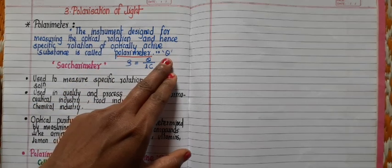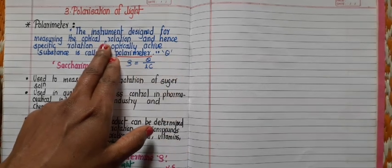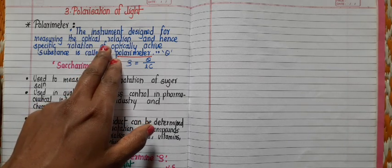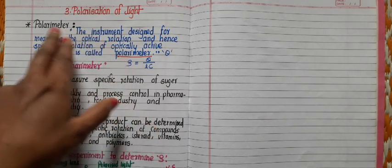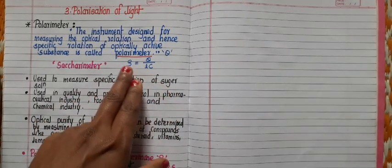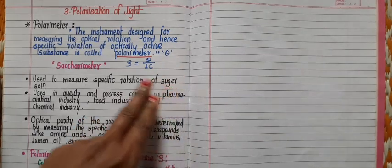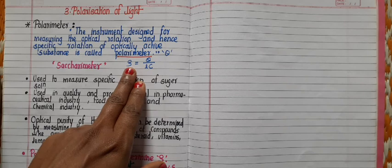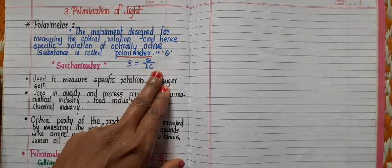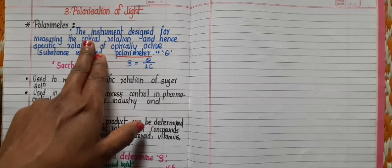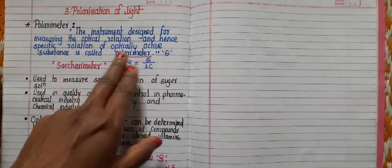Optical rotation is measured in terms of angle theta. Optically active substances include quartz crystal, lactic acid, turpentine, and sugar solution. By using a polarimeter, we can measure optical rotation and calculate rho — the specific rotation — using the relation: rho equals theta divided by L times C, where theta is the angle of rotation, L is the length of the medium, and C is the concentration.